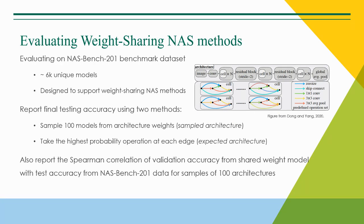In order to evaluate these methods, we use NAS Bench 201, a recently developed tabular benchmark dataset for NAS. We report the final testing accuracy for an architecture search using two methods: sampling 100 architectures, evaluating validation accuracy for each, and then selecting the top architecture using the shared weight model; or just taking the highest probability operation at each edge and testing the resulting model, which we call the expected architecture. We also report the Spearman correlation of the validation accuracy from the shared weight model and tabular test accuracy as a measure of the algorithm's ability to approximate trained-from-scratch test accuracy using the shared weight model.